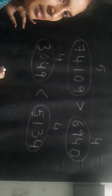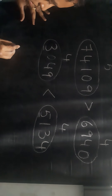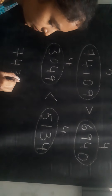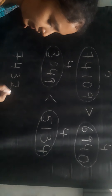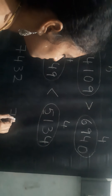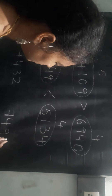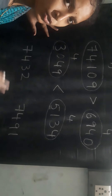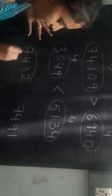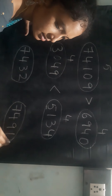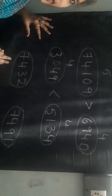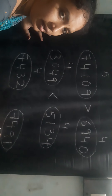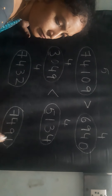Coming to the next example: 7430 and 7491. Compare these two numbers — which is greater? First of all, count the number of digits in both numbers. How many digits are there in this number, children? 1, 2, 3, 4 — 4 digits. Here also: 1, 2, 3, 4 — 4 digits.